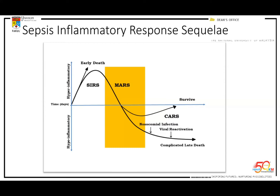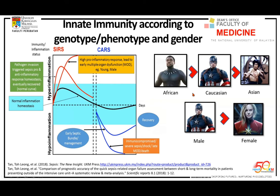How do we predict early death and late death? Based on our meta-analyses and research, our African-descent friends have more protein composition in the body and tend to have more inflammation when infected. Caucasian friends also have good muscle mass but more fat reserves, allowing them to fight longer. For Asian patients, we have less protein and less fat, so we don't react as strongly to infection — the inflammation is gentler. However, with infection, we need good nutritional support to prolong the sepsis sequelae.